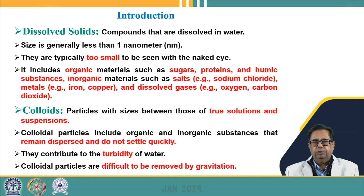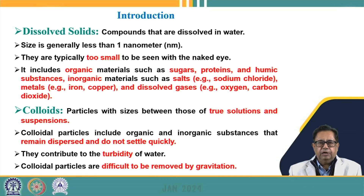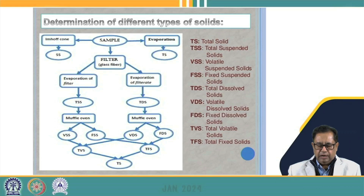Colloidal particles range from one nanometer to one micrometer. Particles in this size range are called colloidal solids, and their size lies between a true solution and a suspension. That is why they remain dispersed in solution and do not settle quickly — they are termed non-settlable solids. We have to use chemicals to remove them, as they are very difficult to remove by gravitation.